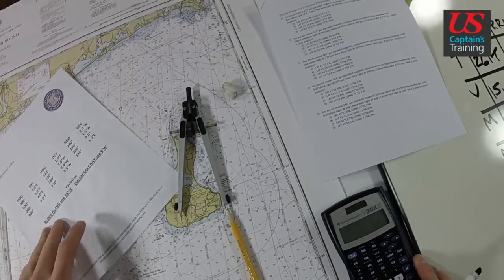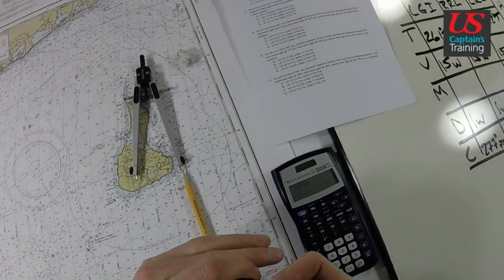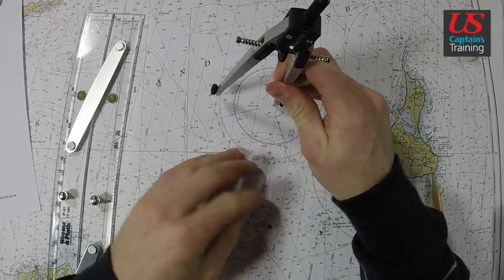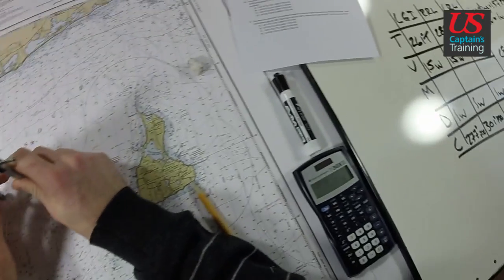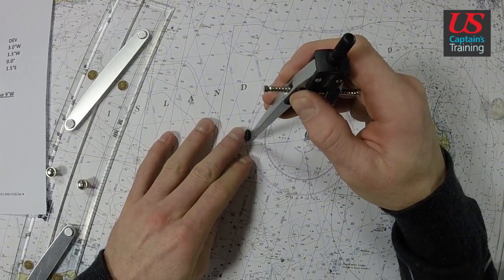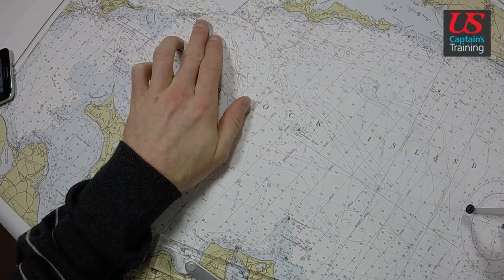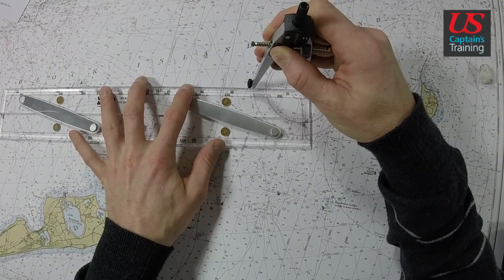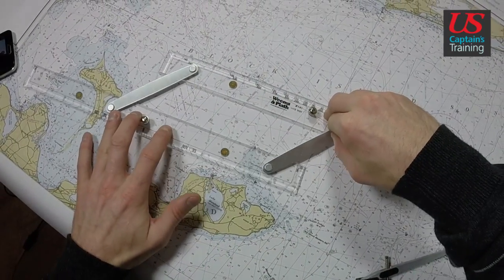Let's get these on the chart. I like to put my compass in the middle just so they land on degrees. Little Gull Island is 261. Little Gull Island is right here. So I'm going to line my parallel rules up.